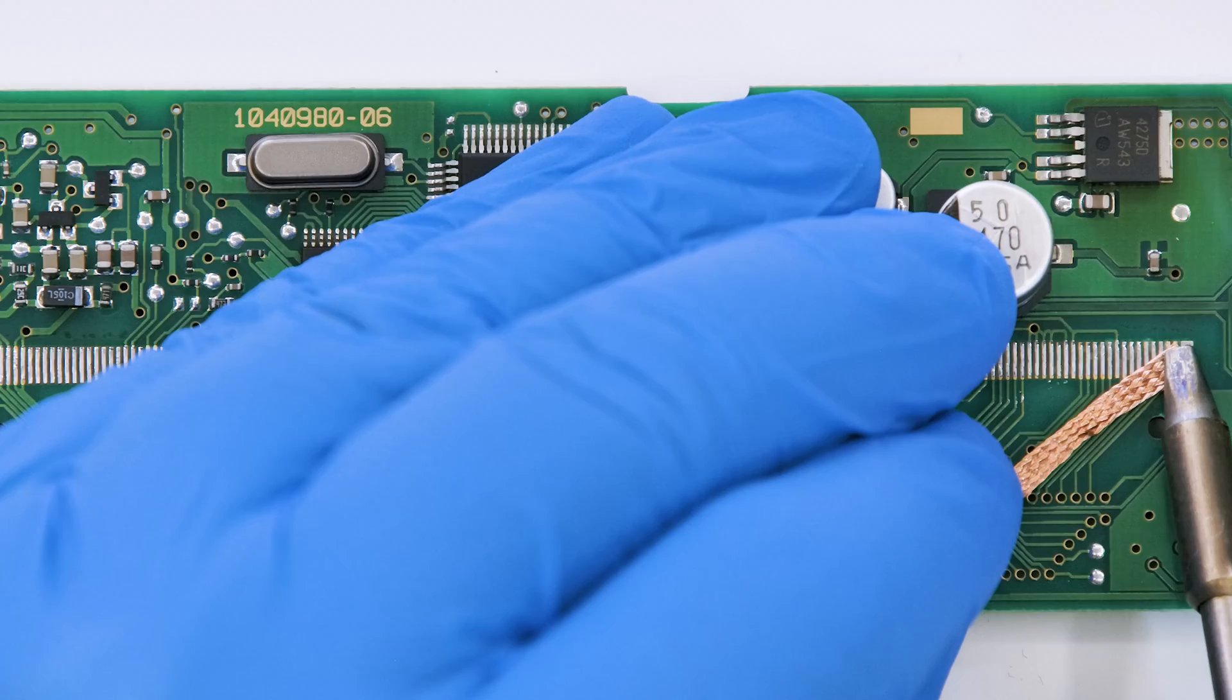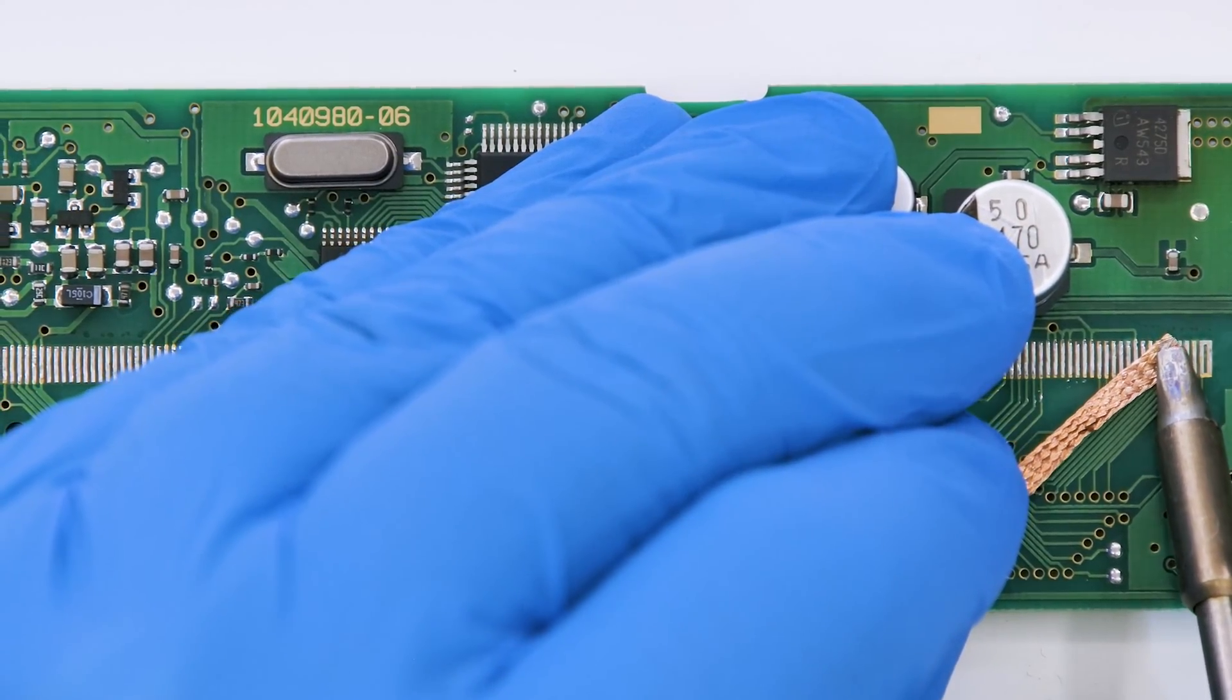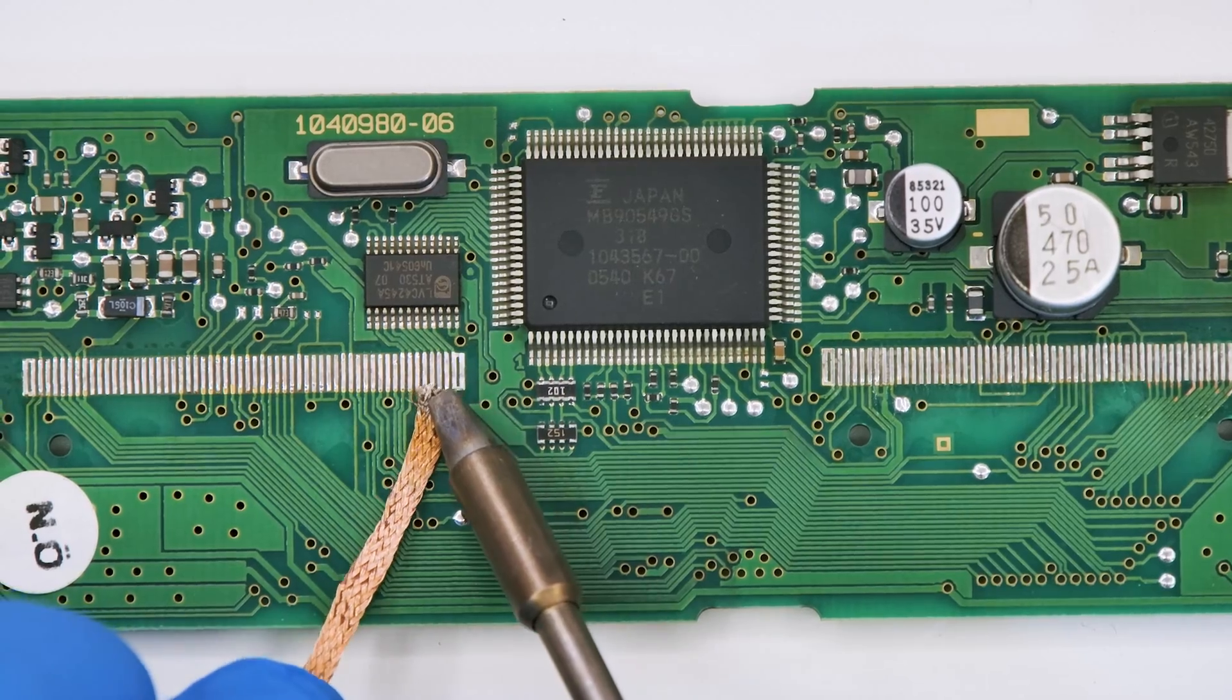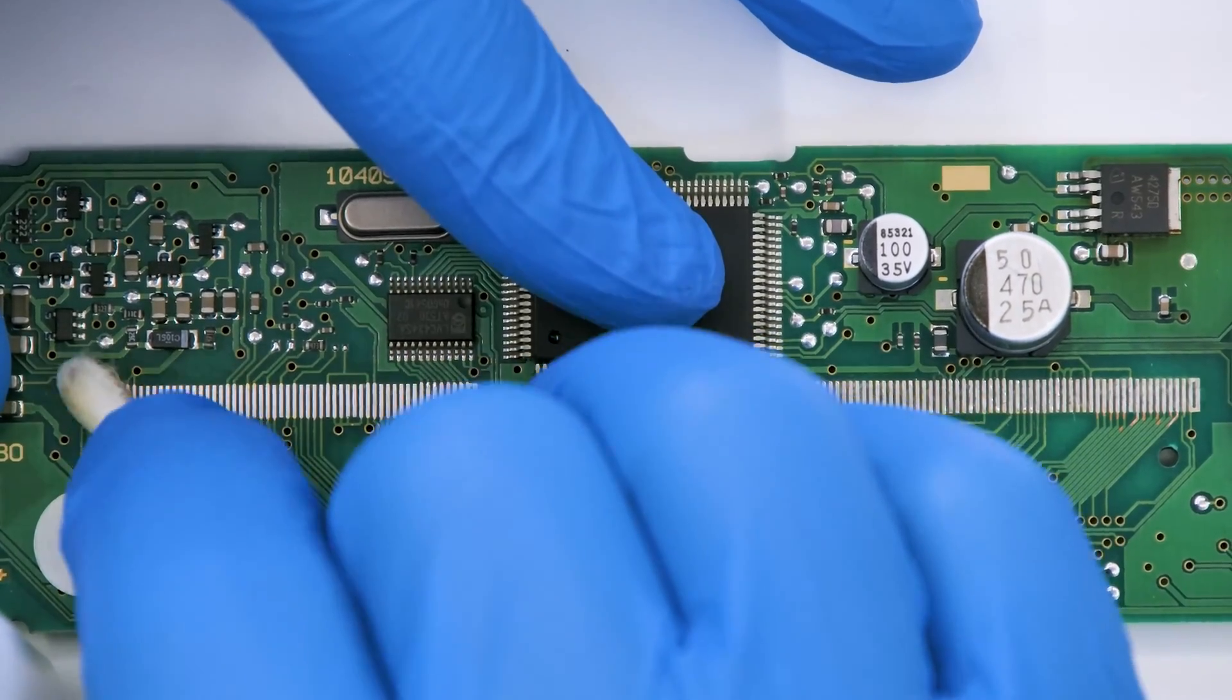With the solder wick and the soldering iron with chisel tip at 350 degrees remove any tin residues from the pads. Clean with some solvent.